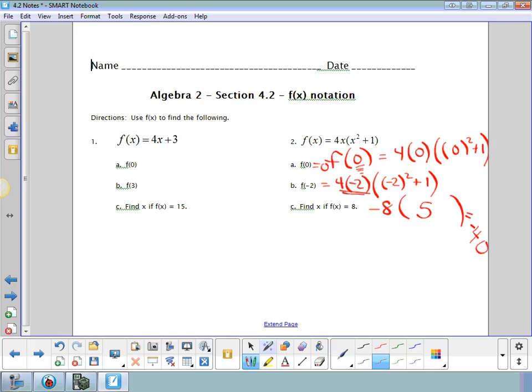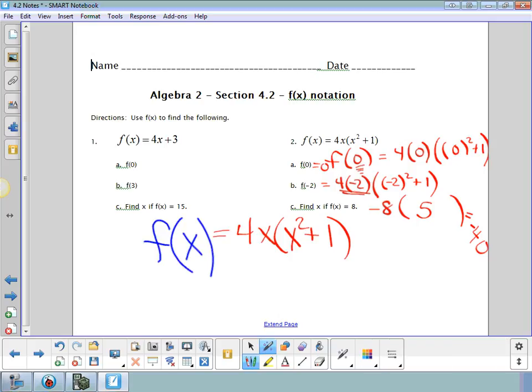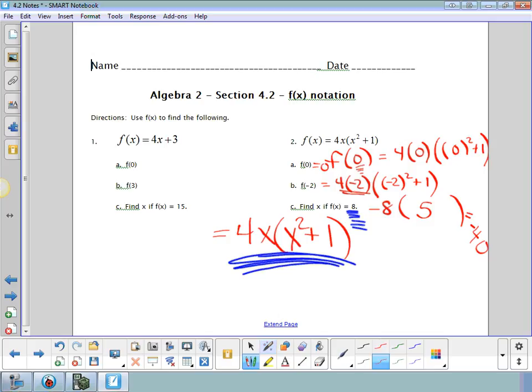Now it's time for 2c. And we have 4x times x squared plus 1. This is our f of x. Normally, they give you what's in the fuel tank and you plug it in for x. Here, they're telling you what the machine produces. They're telling you what the answer is, and you're supposed to work backwards and find the input. This red machine produces what? 8. What input would achieve that? What would you put in to make 8?